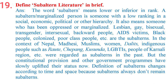Question 19: Define subaltern literature in brief. Answer: The word 'subaltern' means lower or inferior in rank. A subaltern or marginalized person is someone with a low ranking in a social, economic, political or other hierarchy. It also means someone who has been oppressed or marginalized. Lesbian, gay, bisexual, transgender, intersexual, backward people, AIDS victims, black people, colonized people, poor class people, etc. are the subalterns.